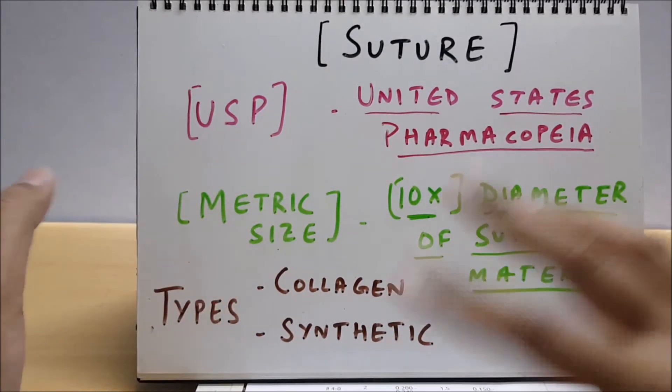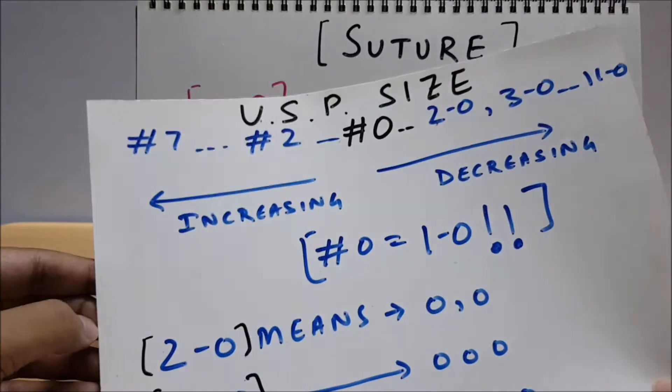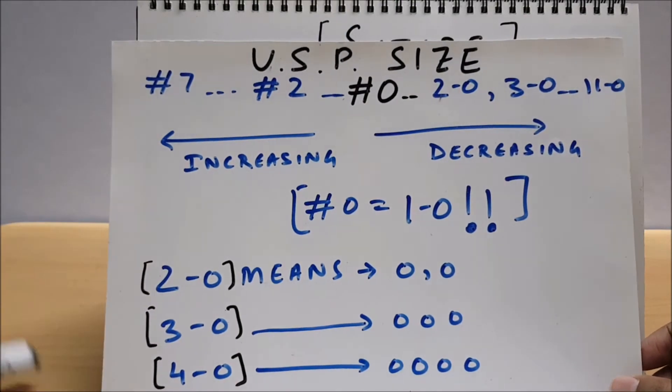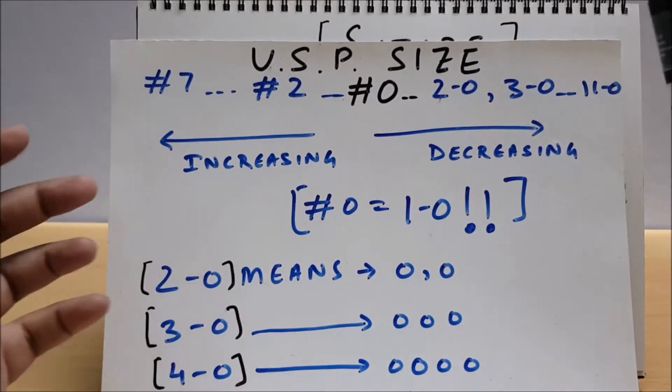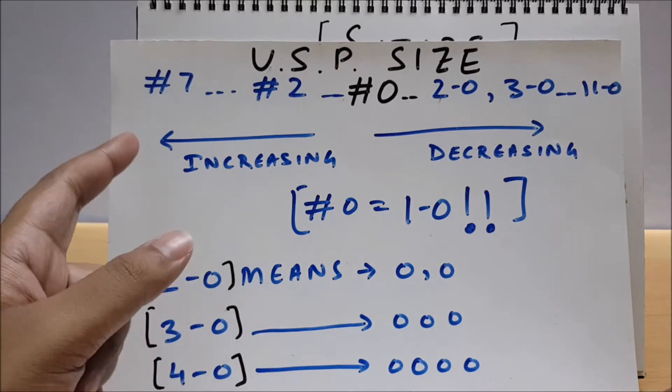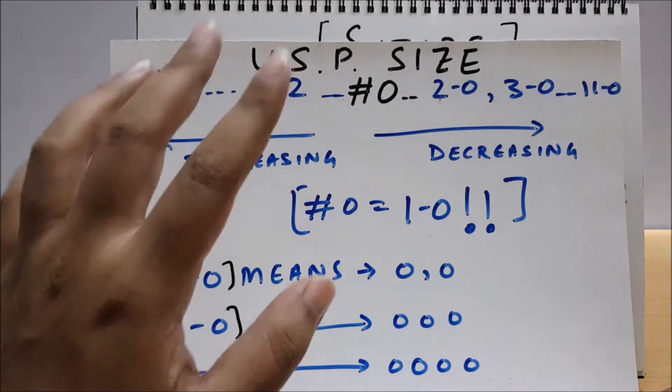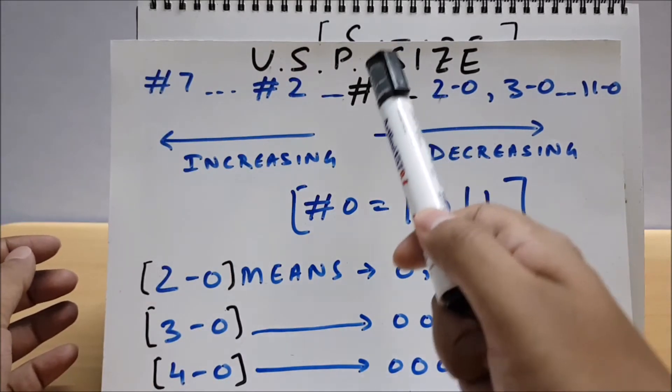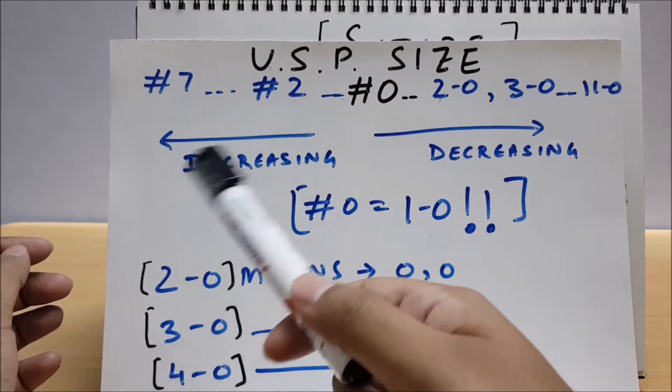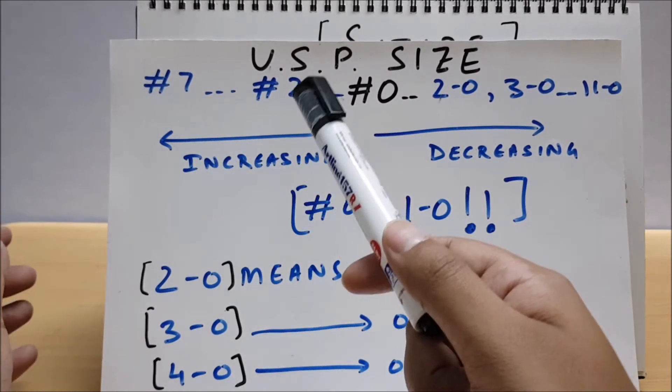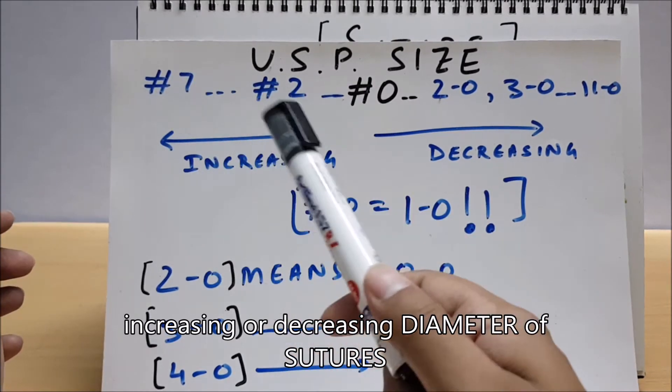Just to let you know what is USP size: Before, when the micro thread or suture material wasn't fine, they used to say like gauge 7, gauge 6, up to gauge 2. So basically, let us take a standard point here. Left to it, it is increasing - like 2 is smaller, 3 is bigger, 4 is bigger than 3, like that.